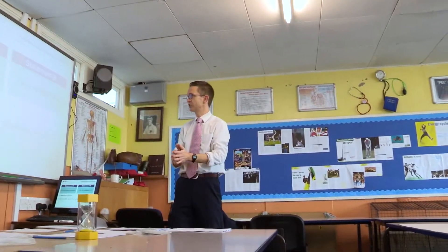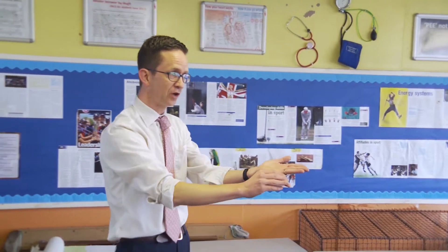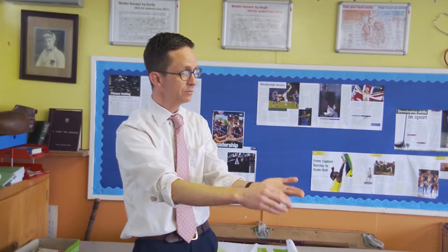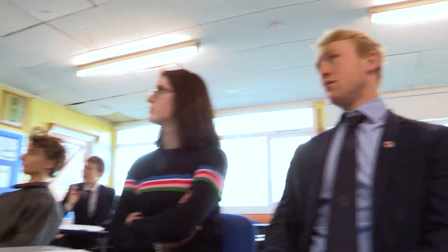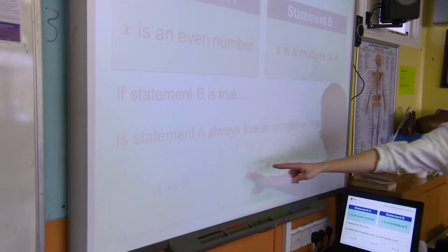The class shared their findings. If statement A is true, is statement B always true, sometimes true, or never true? A student answers 'sometimes true.' The teacher asks for an example when it is true and an example when it isn't. Henry gives the example of four: if x equals four, A is true — it's an even number — and it's also a multiple of four, so B is sometimes true.